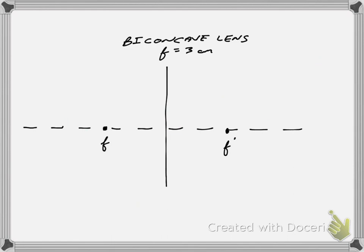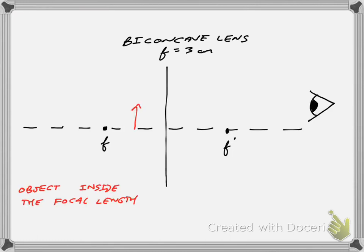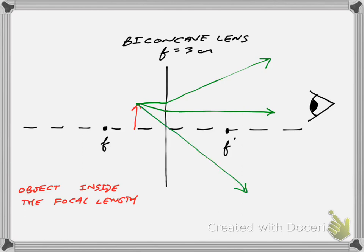If we move the object inside the focal length on a biconcave lens, the result is the same. The parallel-in ray bends up as if from the focal point on the left. The second ray aims toward the focal point on the right and bends to parallel. The center ray goes straight through. These don't intersect, but the brain projects them back, and they appear to intersect — giving a reduced, upright, virtual image regardless of where the object is placed.